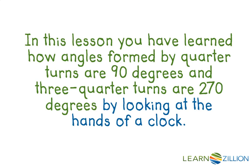In this lesson, you have learned how angles formed by quarter turns are 90 degrees and 3 quarter turns are 270 degrees by looking at the hands of a clock.